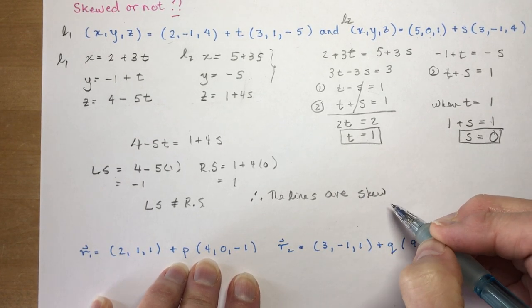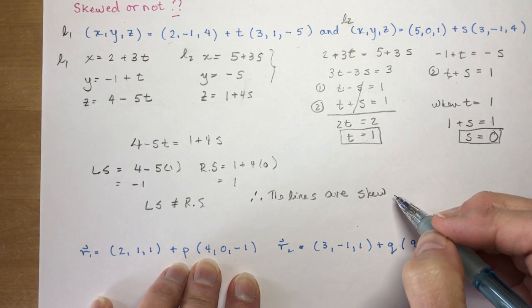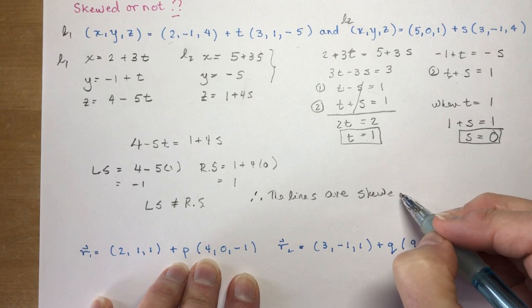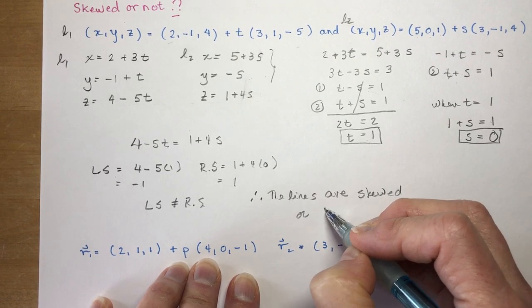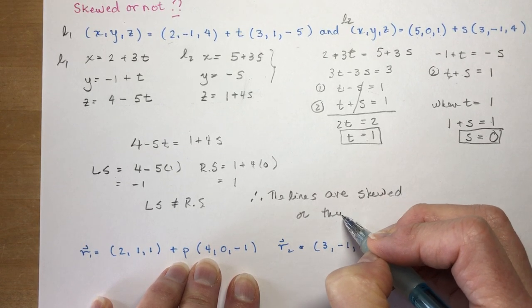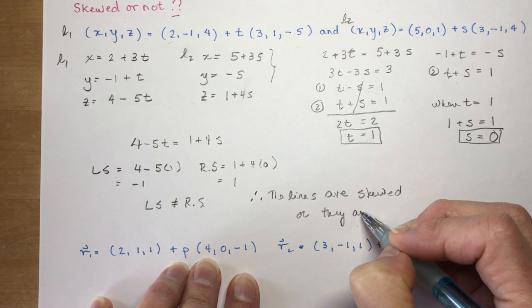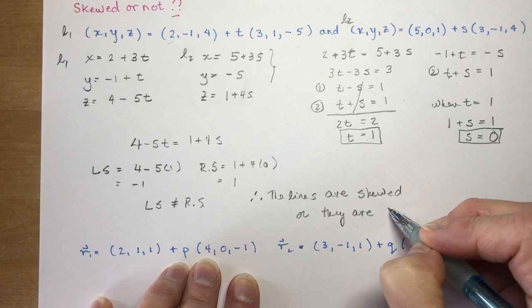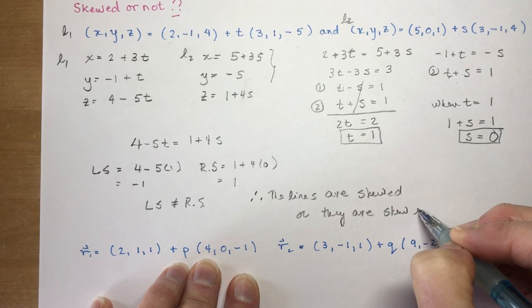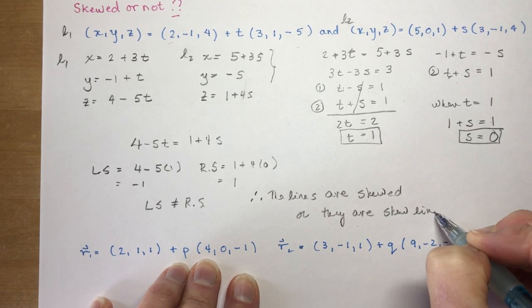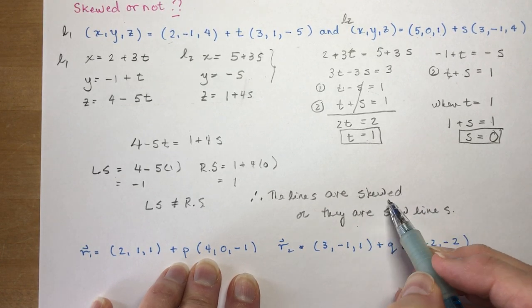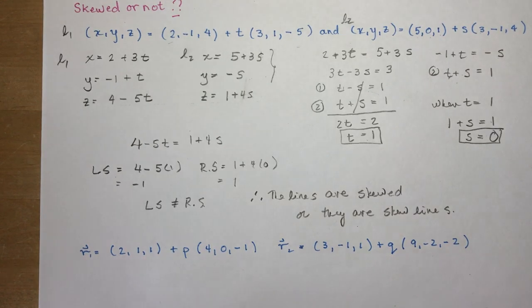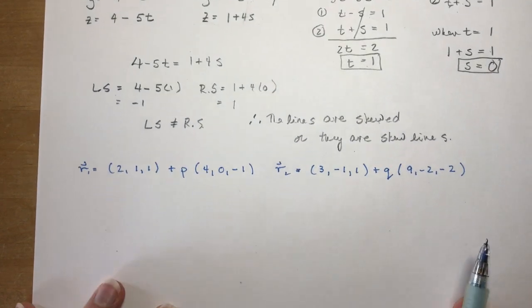The lines are skewed — or you say they are skew lines. One's an adjective, one's a verb. They are skewed.